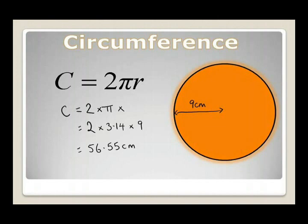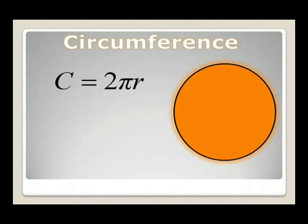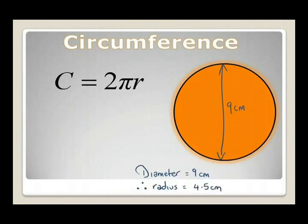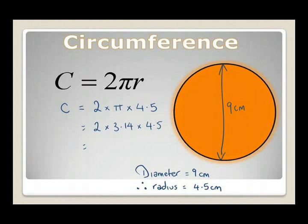Let's look at another example. In this example we have a diameter of 9 cm, so we have to work out the radius. The radius is half the diameter: half of 9 is 4.5 cm. Substituting into the formula: circumference = 2 × π × 4.5 = 2 × 3.14 × 4.5 = 28.28 cm. And that is the circumference.